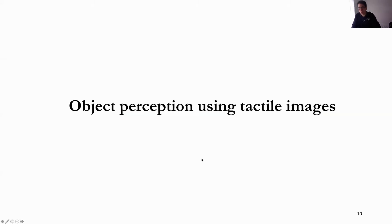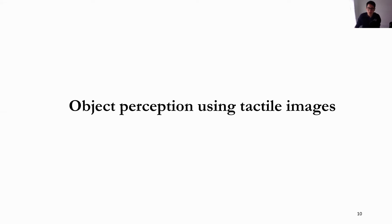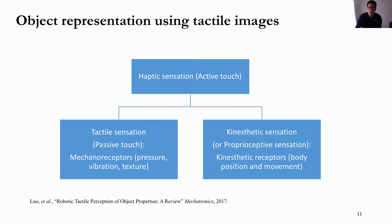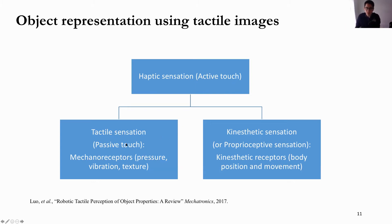Now we have the sensor and the data — how can we extract information from the tactile images? This leads to object perception using tactile images. For object perception through touch, we have haptic sensation, which can be divided into two parts. The first is tactile sensation: we sense the pressure distributions at the finger pads — a passive touch — where we can sense pressure, vibration, and textures when in contact with objects.